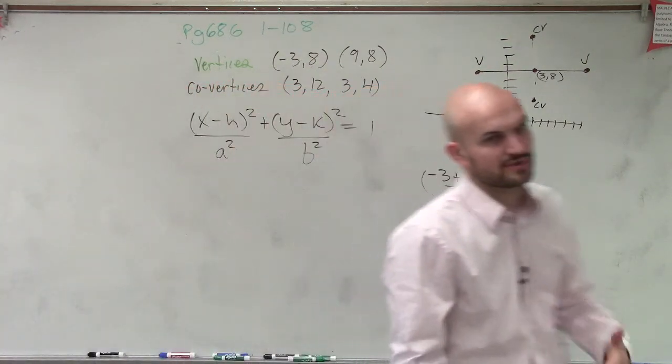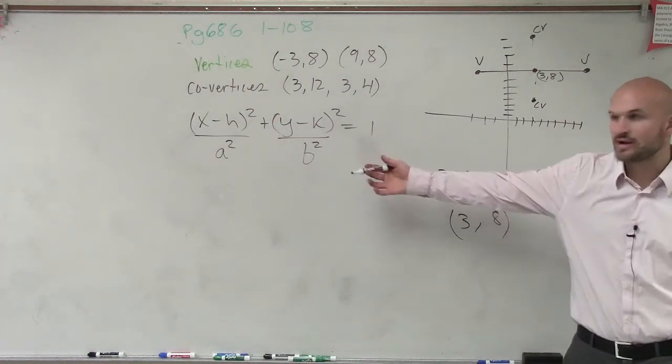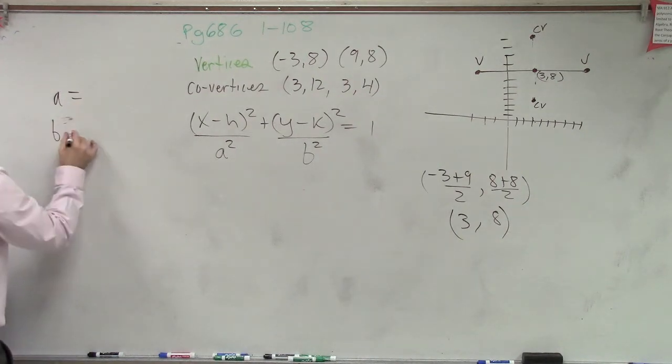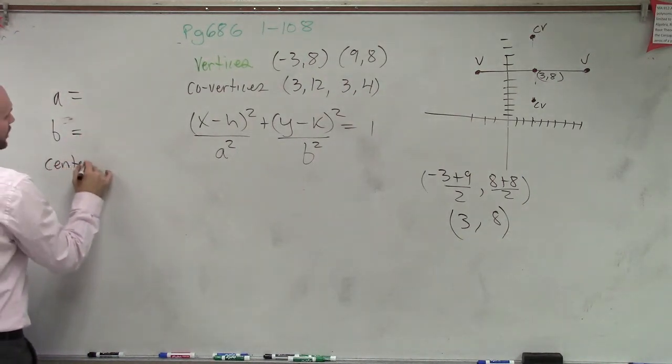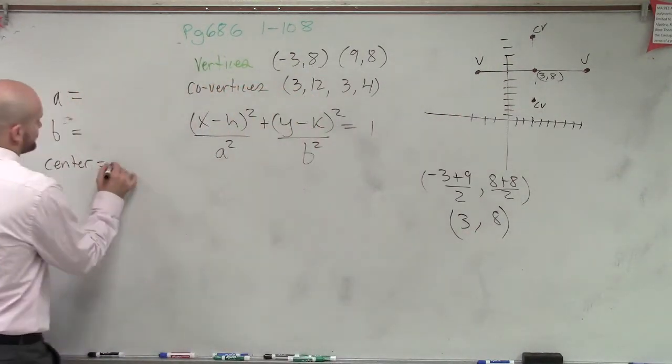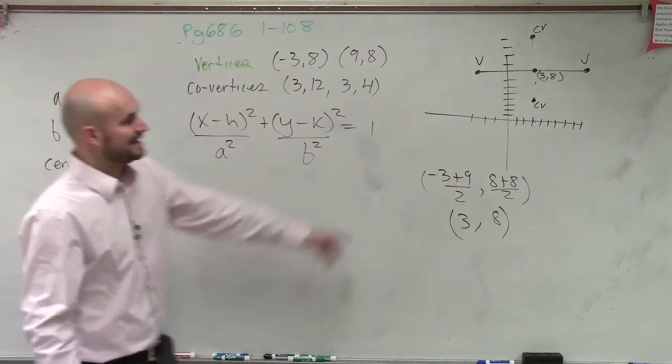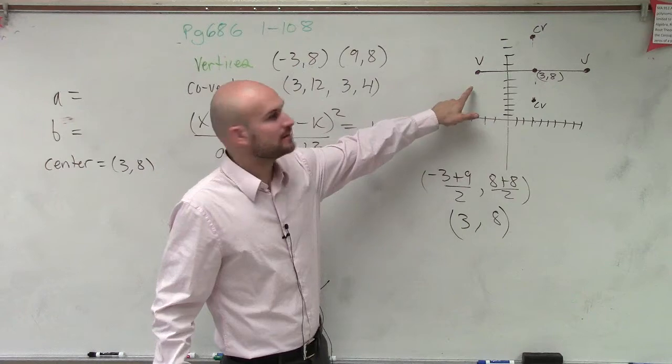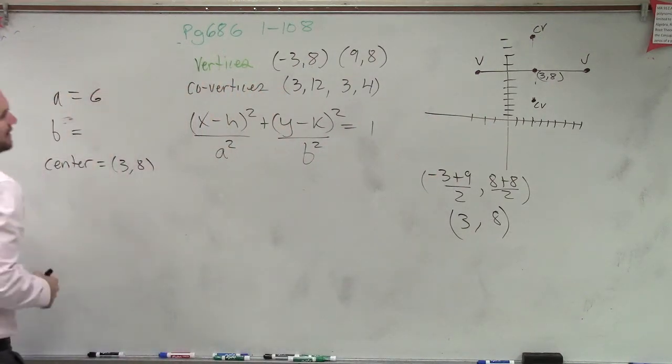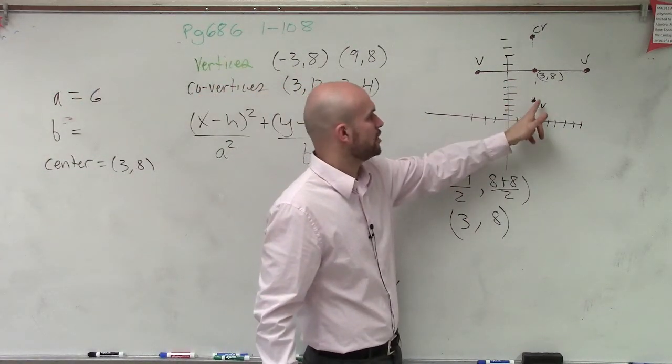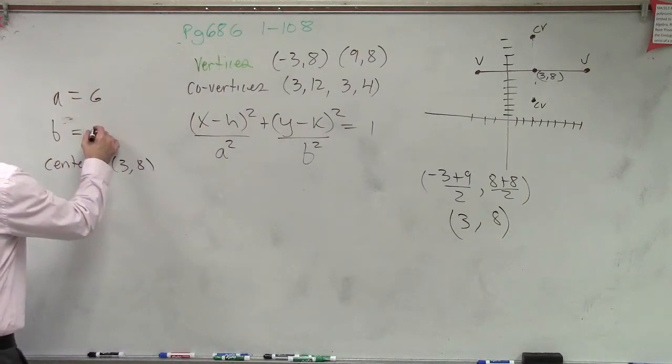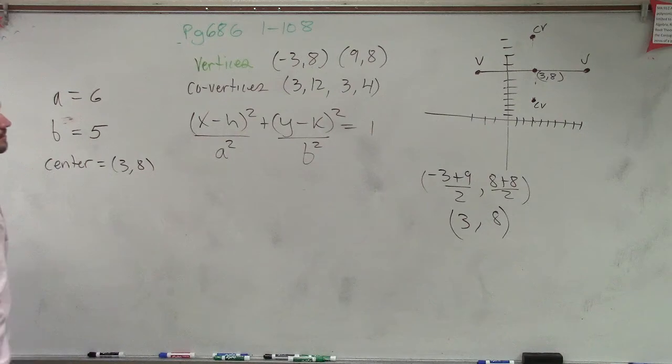Now, what I simply just need to do is say, what is the information I know? To write this equation, I need to know what a equals, b equals, and I need to know what the center is. Well, we found the center by using the midpoint formula. The center, in this case, is 3 comma 8. A is the distance from the center to my vertice, which we can say is 6. And b is the distance from my center to my co-vertice, which we can say is 4.